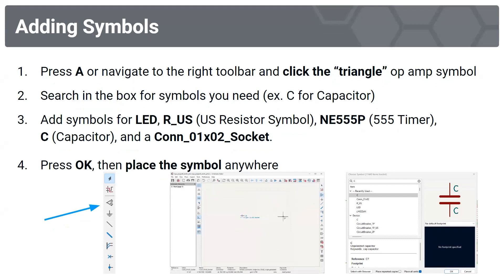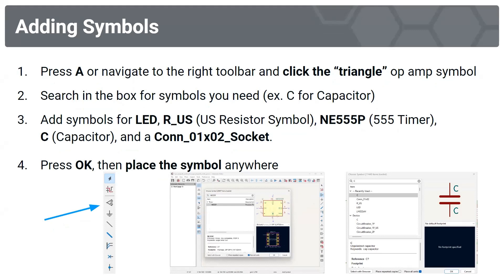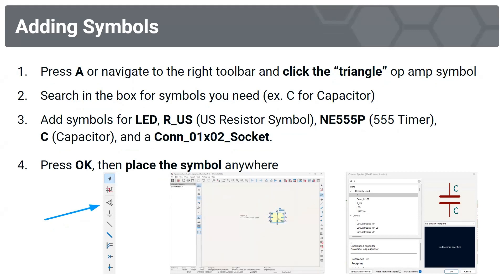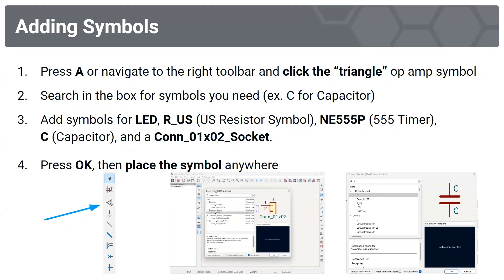The symbols we're going to add are: an LED, R_US which is the US resistor symbol, a 555 timer, a capacitor, and a 1x2 socket connector. Once you're done, press OK and place the symbol anywhere like we did for the power symbols.